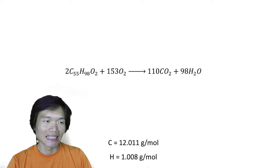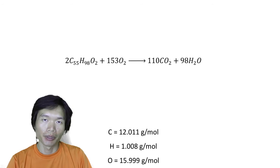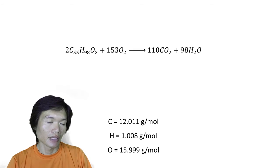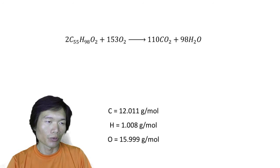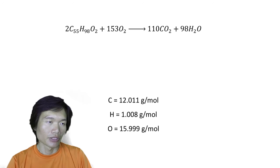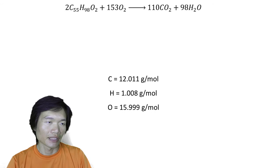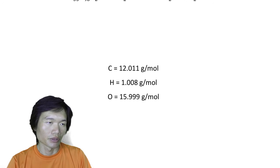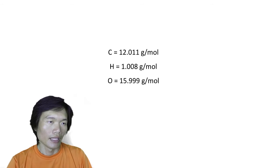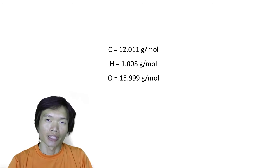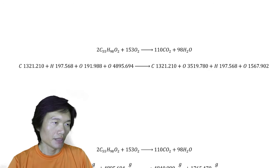Alright, let's calculate the weight. So just pull out your periodic table. We have carbon equals 12.011g per mole, hydrogen 1.008g per mole, oxygen 15.999g per mole. And after the calculation, we have this number.